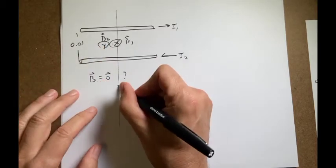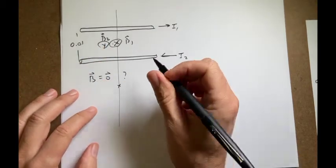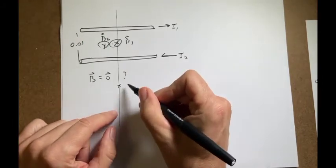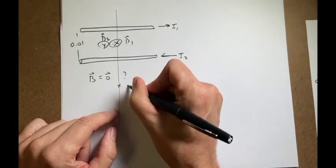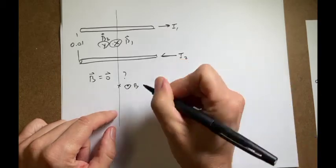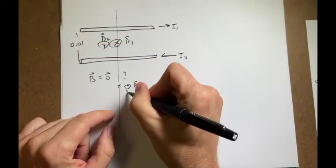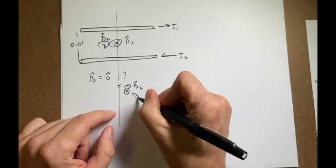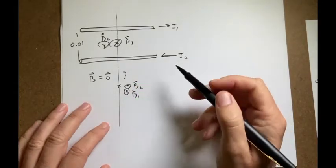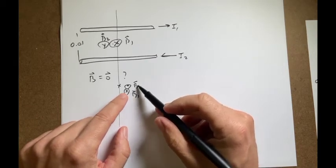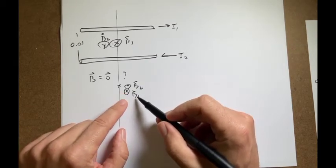Well, what about down here? Down here, I have a magnetic field due to wire 2 is going to be now out of the page, B2. And 1 is going to be into the page, B1. So could those two cancel? Well, where could I be such that this magnitude is equal to that magnitude and then cancel?